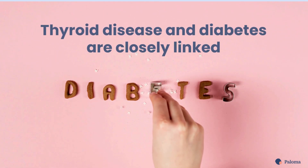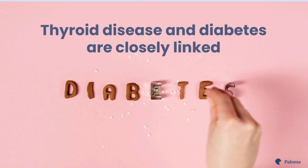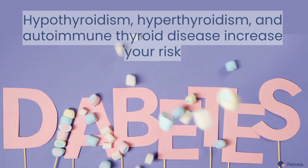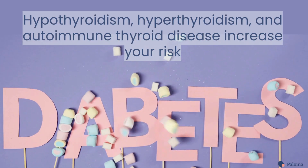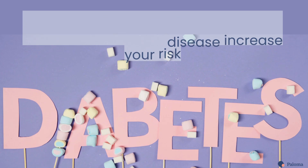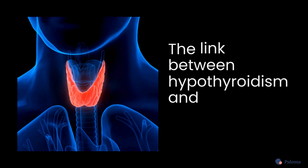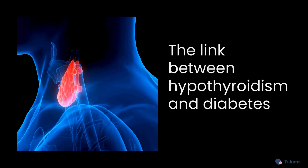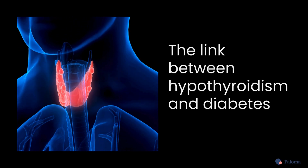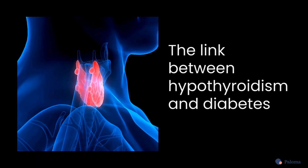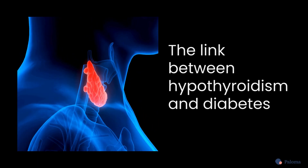Did you know that thyroid disease and diabetes are closely linked? Hypothyroidism, hyperthyroidism, or autoimmune thyroid disease all increase your risk of various forms of diabetes. And having diabetes puts you at a higher risk of a thyroid condition. So it's common for patients to have both conditions. Let's explore why.